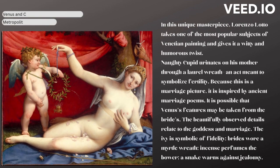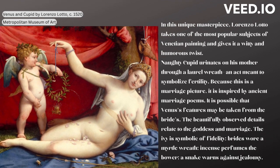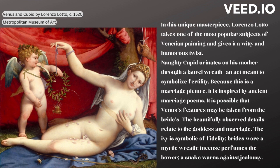In this unique masterpiece, Lorenzo Lotto takes one of the most popular subjects of Venetian painting and gives it a witty and humorous twist. Naughty Cupid urinates on his mother through a laurel wreath, an act meant to symbolize fertility. Because this is a marriage picture, it is inspired by ancient marriage poems, and it is possible that Venus's features may be taken from the bride's. The beautifully observed details relate to the goddess and marriage: the ivy is symbolic of fidelity, brides wore a myrtle wreath, incense perfumes the bower, and a snake warns against jealousy.